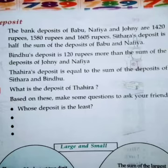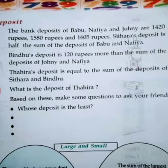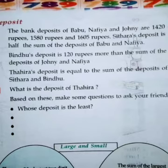This is our today's first activity. The bank deposits of Babu, Nafia and Joni are Rs. 1420, Rs. 1580 and Rs. 1650. Sitara's deposit is half the sum of the deposits of Babu and Nafia. Bindu's deposit is Rs. 120 more than the sum of the deposits of Joni and Nafia. Tahira's deposit is equal to the sum of the deposits of Sitara and Bindu. What is the deposit of Tahira? This is our question.